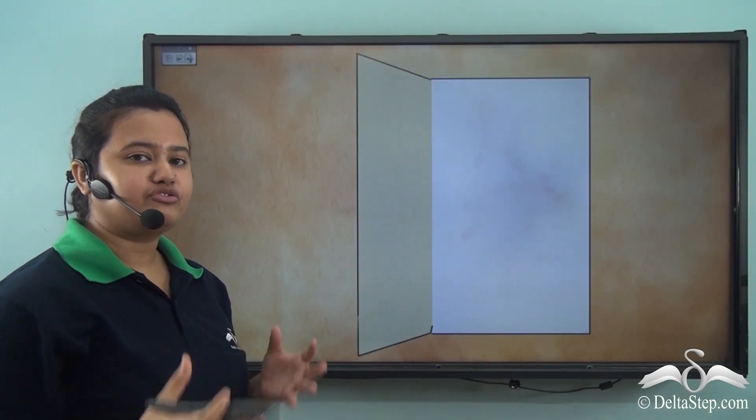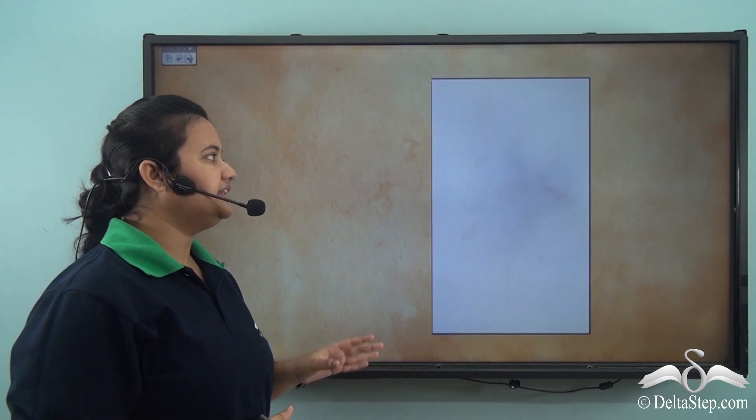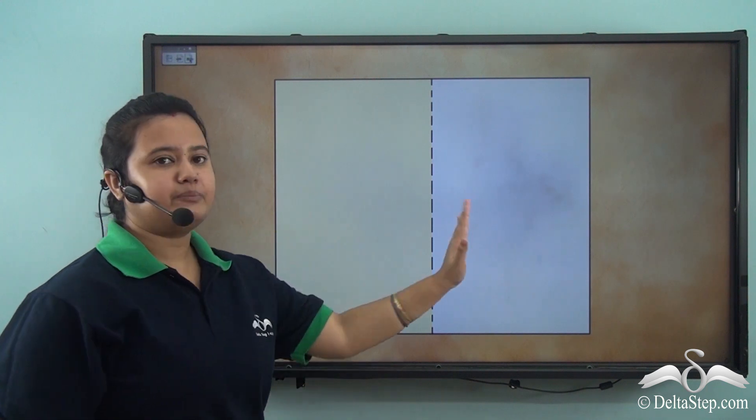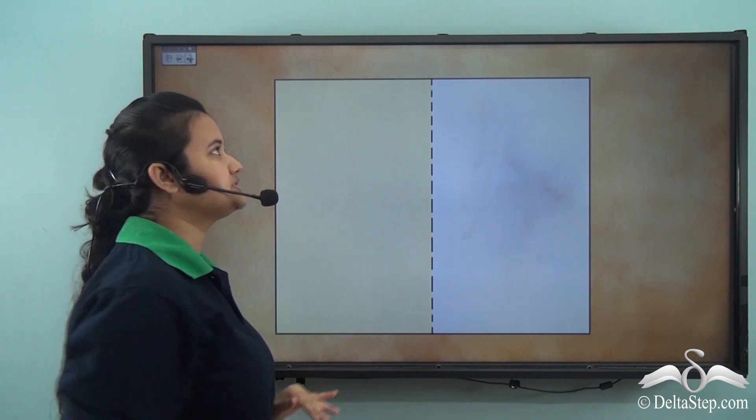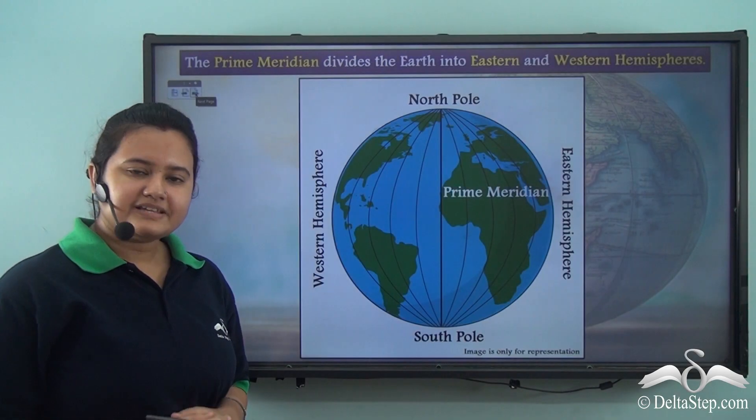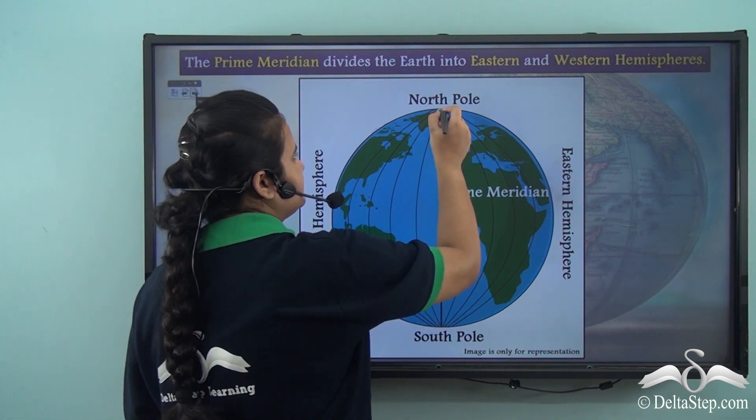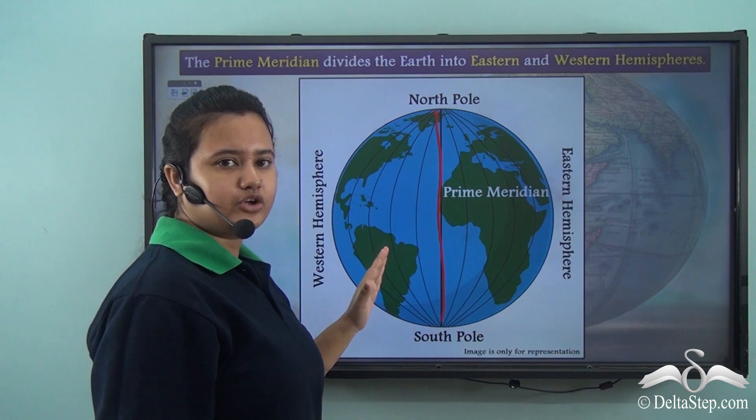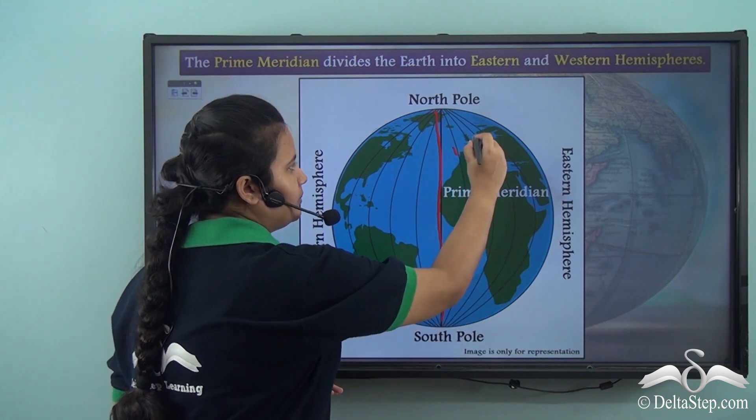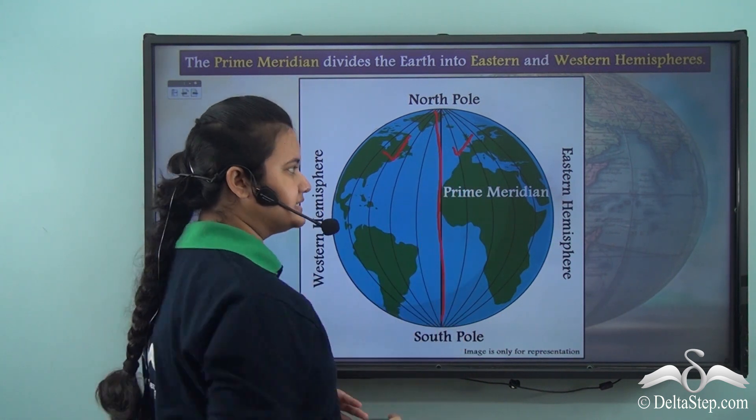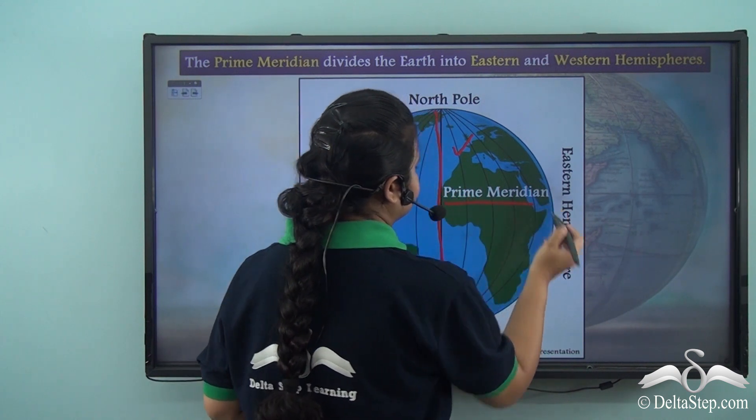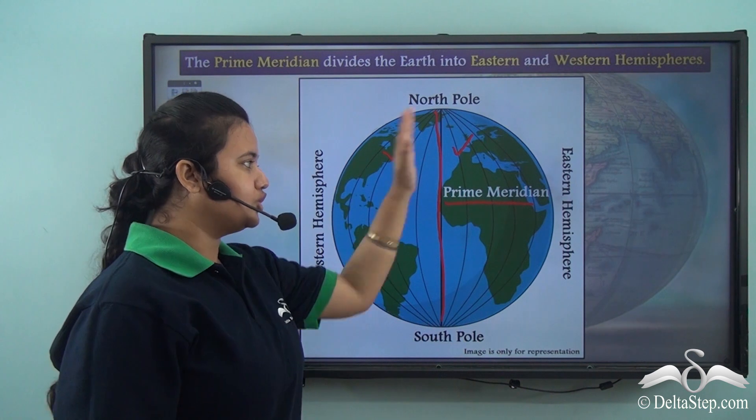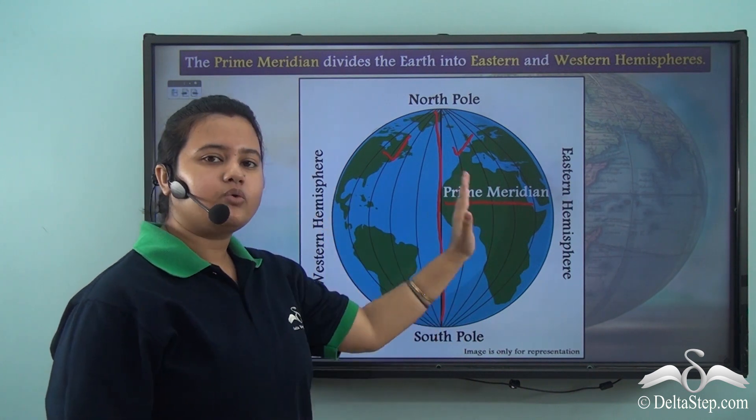Take a piece of paper and fold it into half. You will find that a vertical line or a crease separates the paper into two equal halves. Similarly, an imaginary vertical line that separates the entire globe into two equal halves is known as the prime meridian. We see that this line divides the globe into two equal parts.